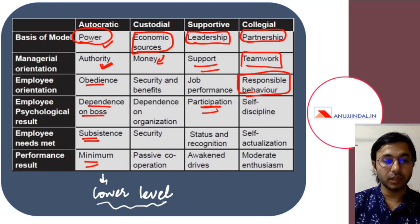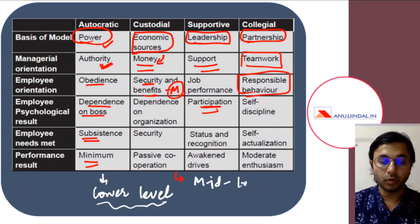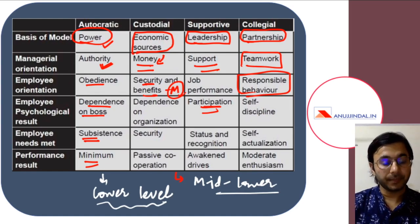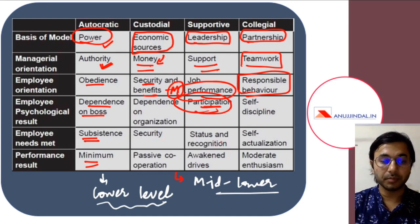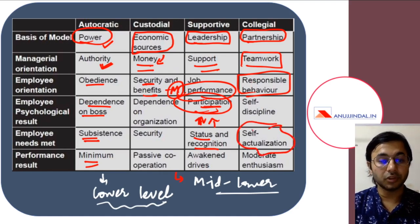The custodial model relies on money to manage people. Employee orientation is on security and benefits, and they are motivated primarily by money. This is normally followed at the lower to middle level of the organization. The supportive model uses leadership and support to motivate employees. Employee orientation is focused on performance, and the psychological result is participation of employees, providing status and recognition needs. The collegial model moves a step further, focusing on partnership and complete delegation so that self-actualization needs of employees are met.